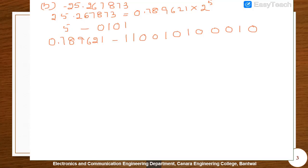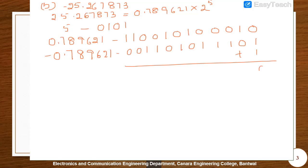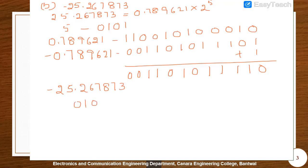Since the number is negative, we need to represent it as minus 0.789621. That is done by taking the 2's complement. First, take the 1's complement of 1 1 0 0 1 0 1 0 0 1 0 1, which gives 0 0 1 1 0 1 0 1 1 0 1 1 0 1. Then add 1 to get 0 1 1 1 0 1 0 1 0 1 0 0. Therefore, minus 25.267873 is represented as: exponent 0101 followed by mantissa 0 1 1 1 0 1 0 1 0 1 1 1 1 0. This is how we represent it in floating point format.